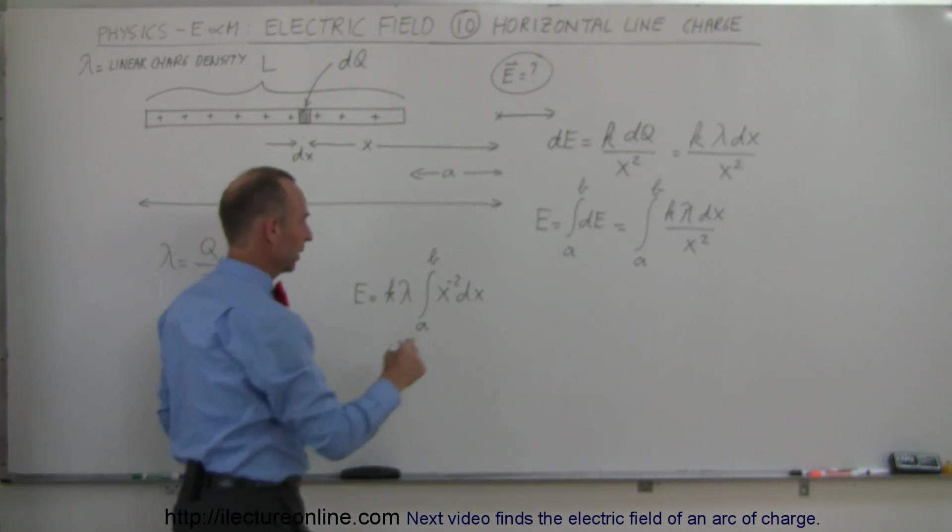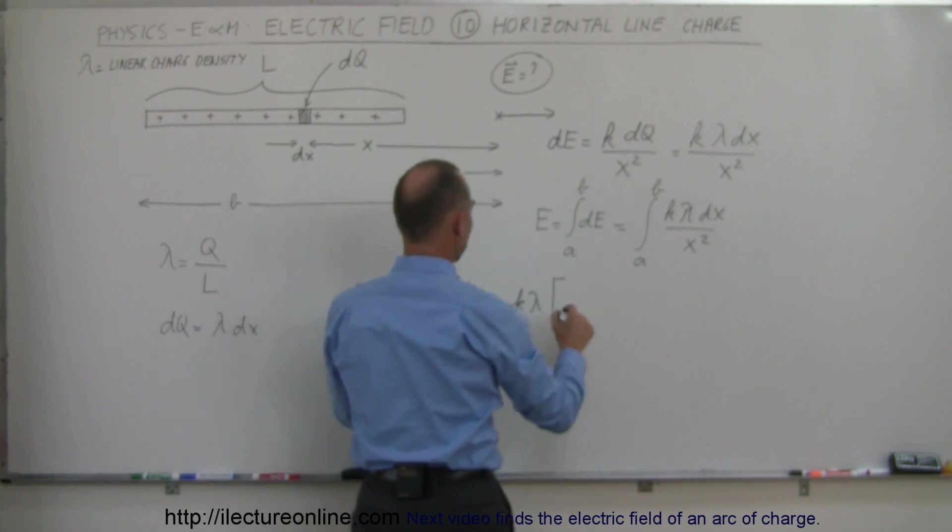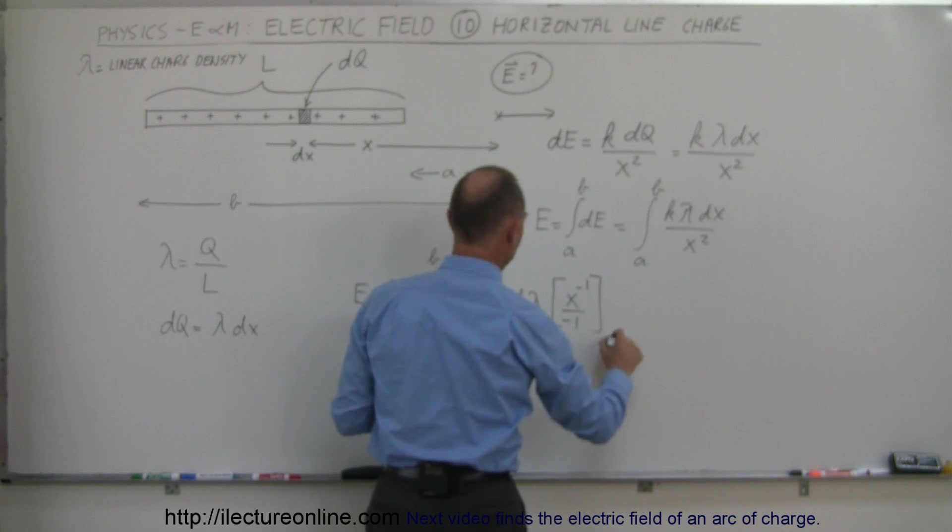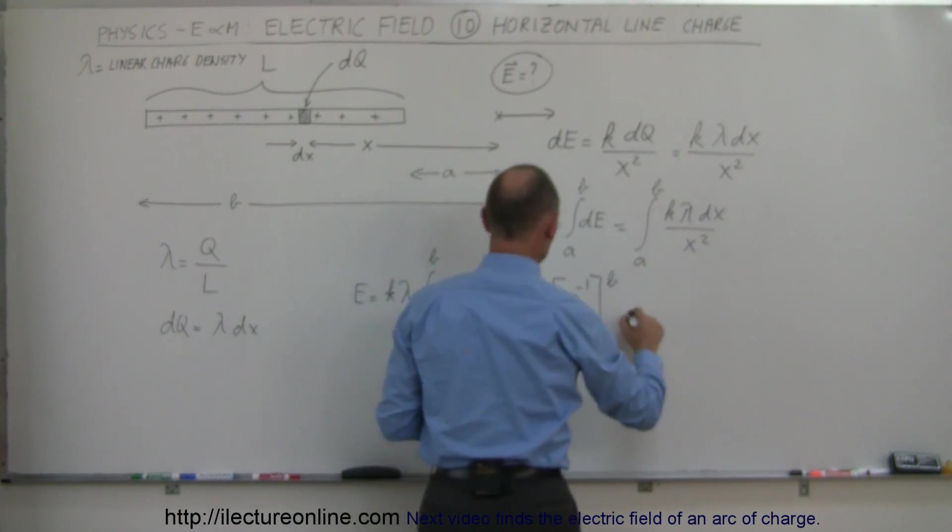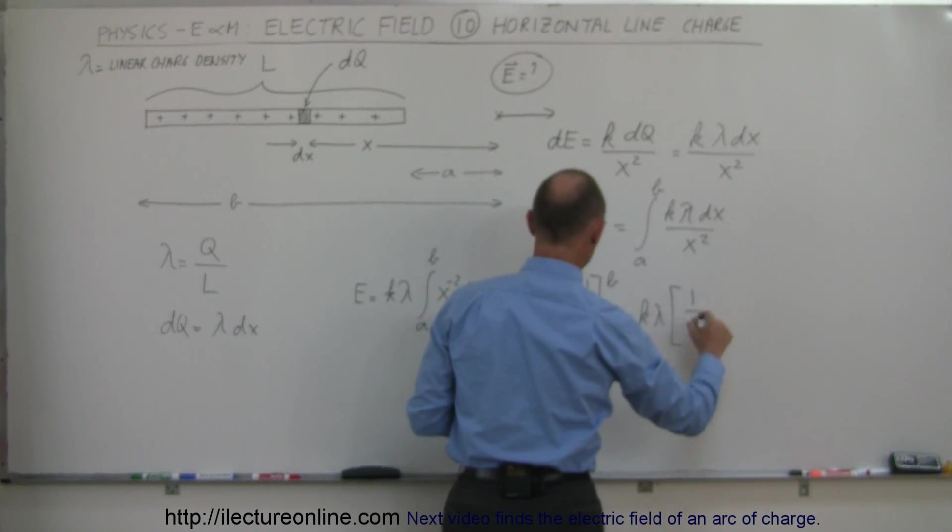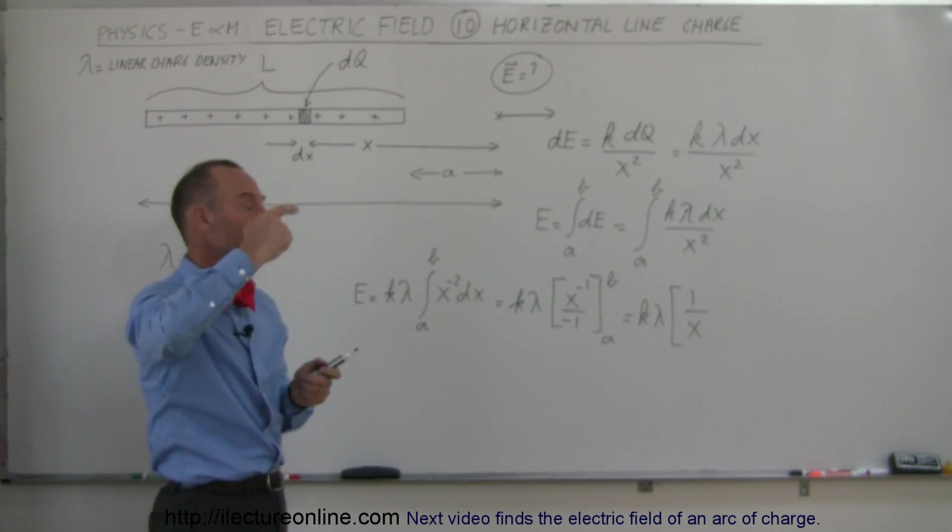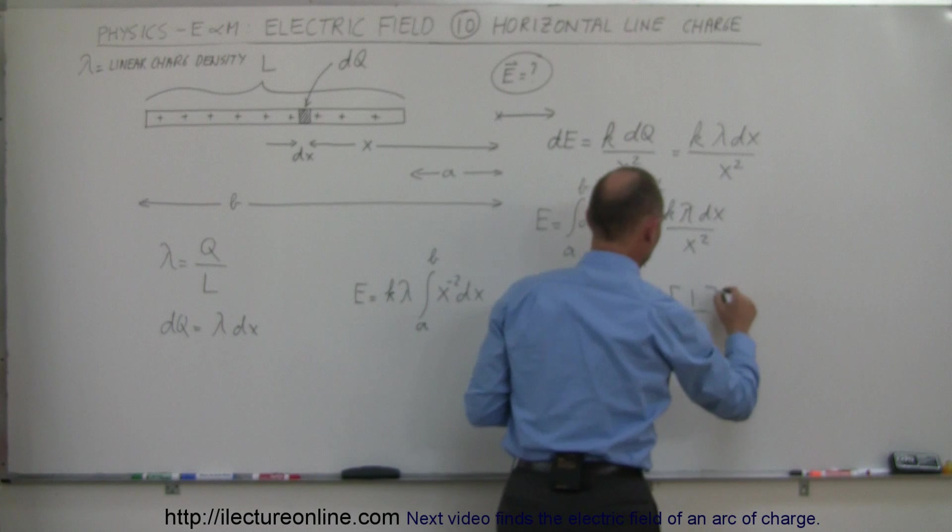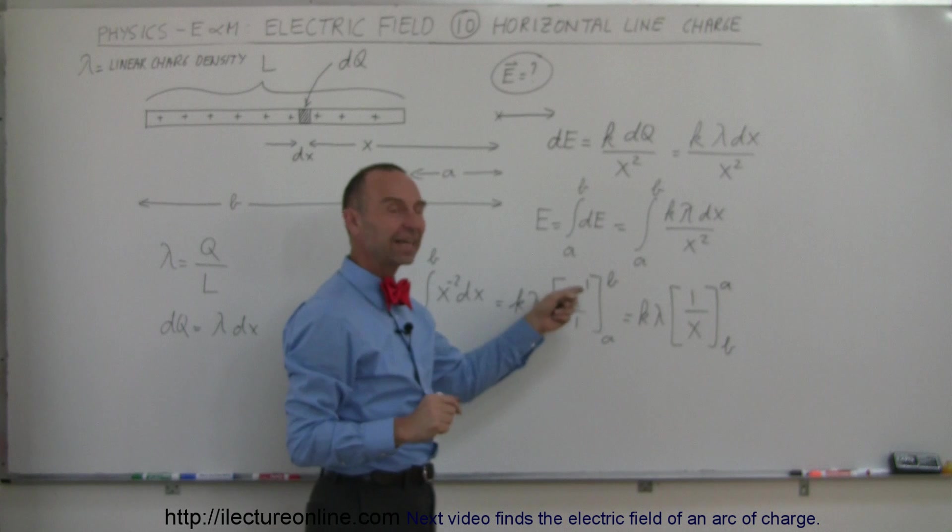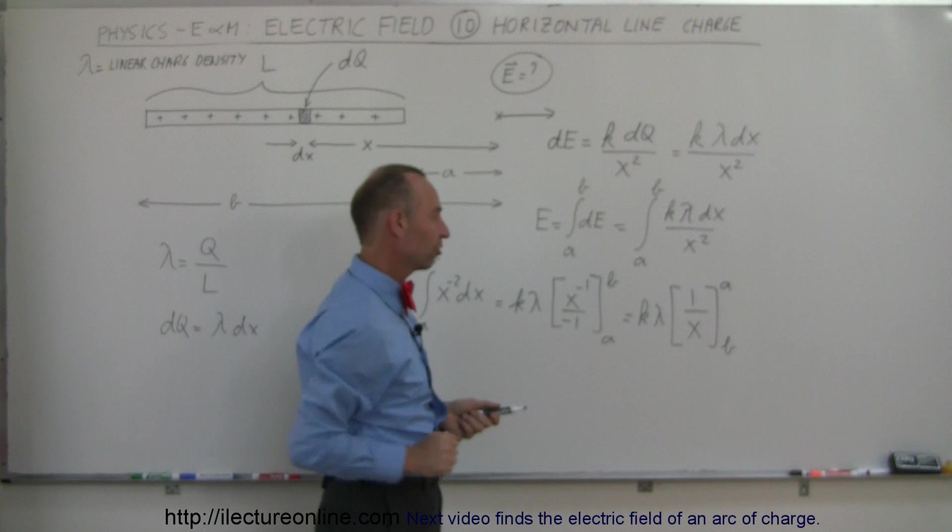Of course, that integral right there, that is equal to K lambda times, that would be X to the minus 1 power divided by the new exponent minus 1 from A to B, and so that is equal to K lambda times 1 over X to the first power. Now, I left off the negative sign because I'm going to switch my limits. So that leaves me with a B and an A. So it's a little trick whenever you end up with a negative inside here and you want to evaluate it, you can simply turn that into a positive and switch the limits around.